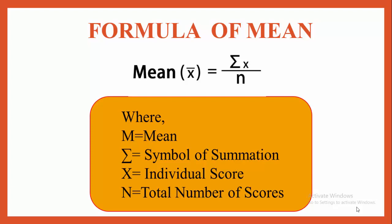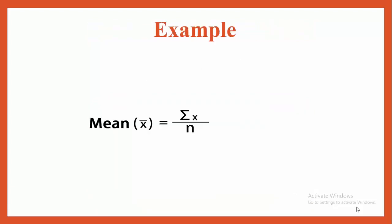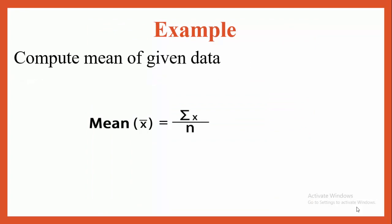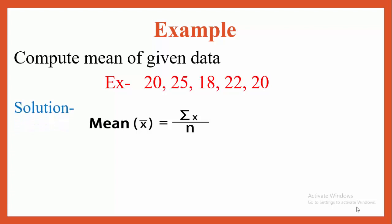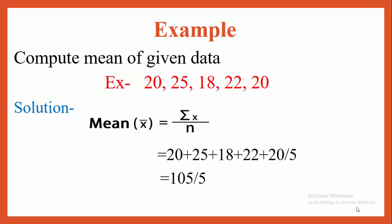We will see an example: compute the mean of given data. The data given is 20, 25, 18, 22, and 20. Solution: we use the formula M = ΣX / N. By adding all five numbers we get 105 / 5. Therefore, the mean of this ungrouped data is equal to 21.